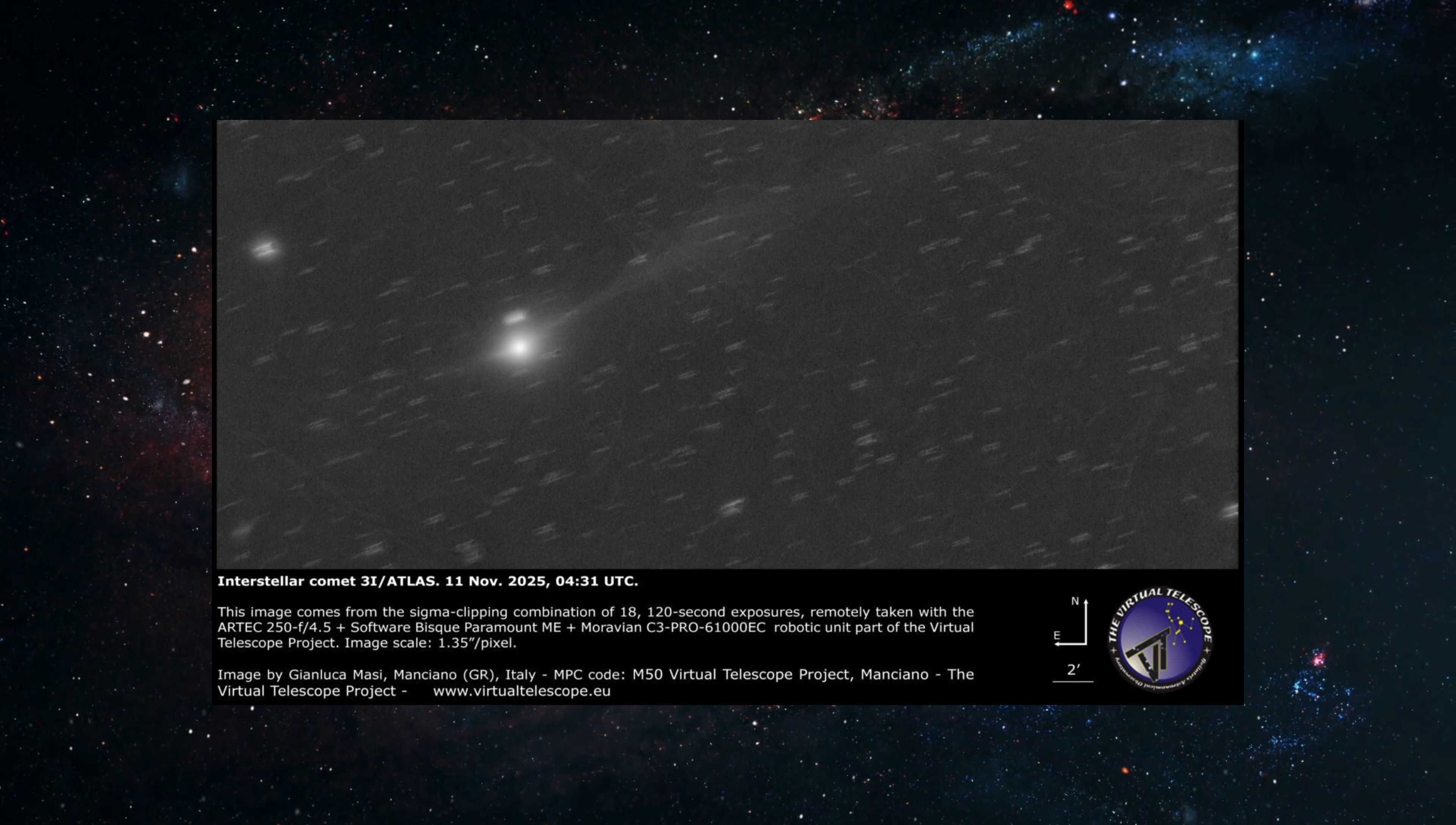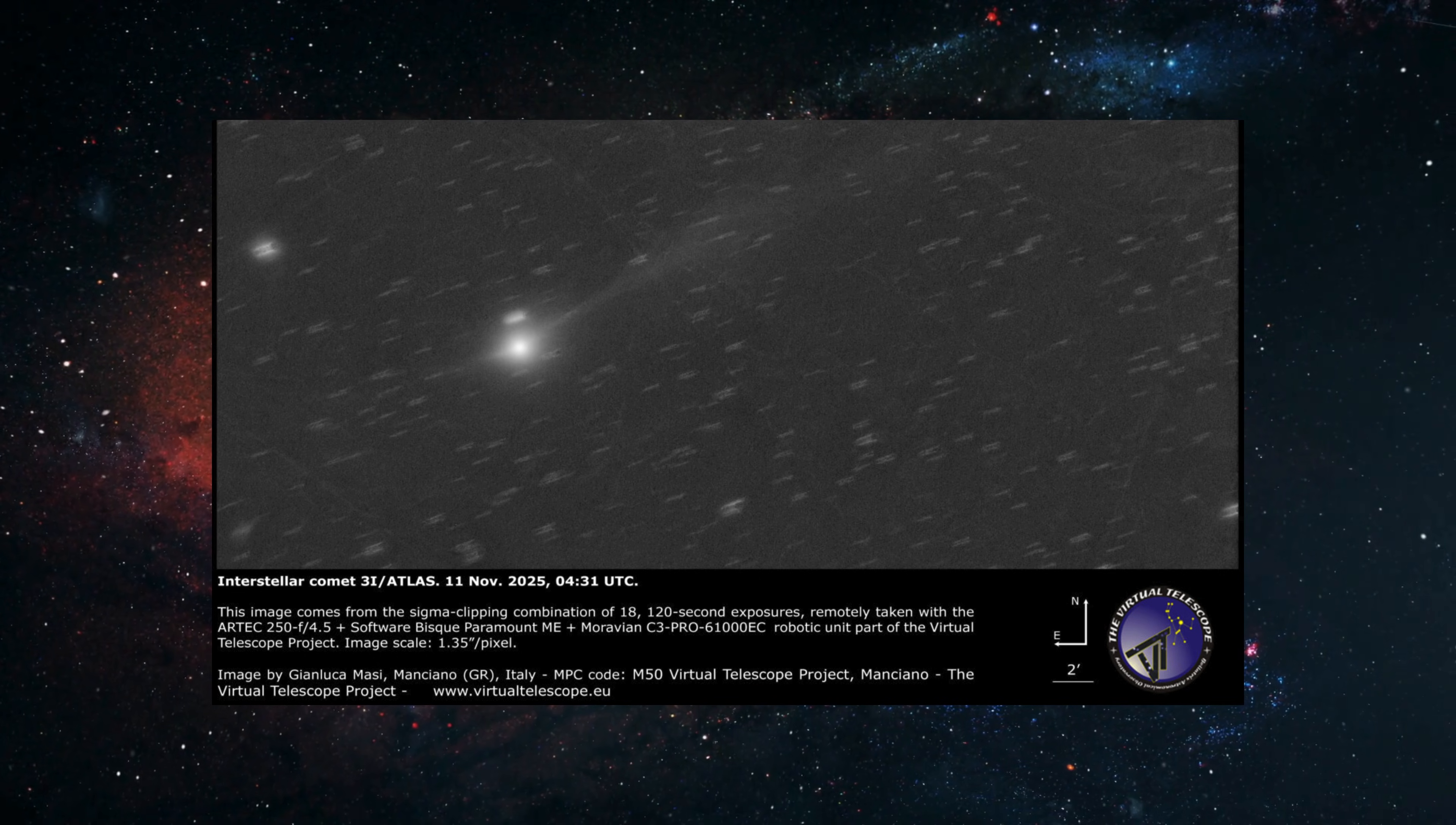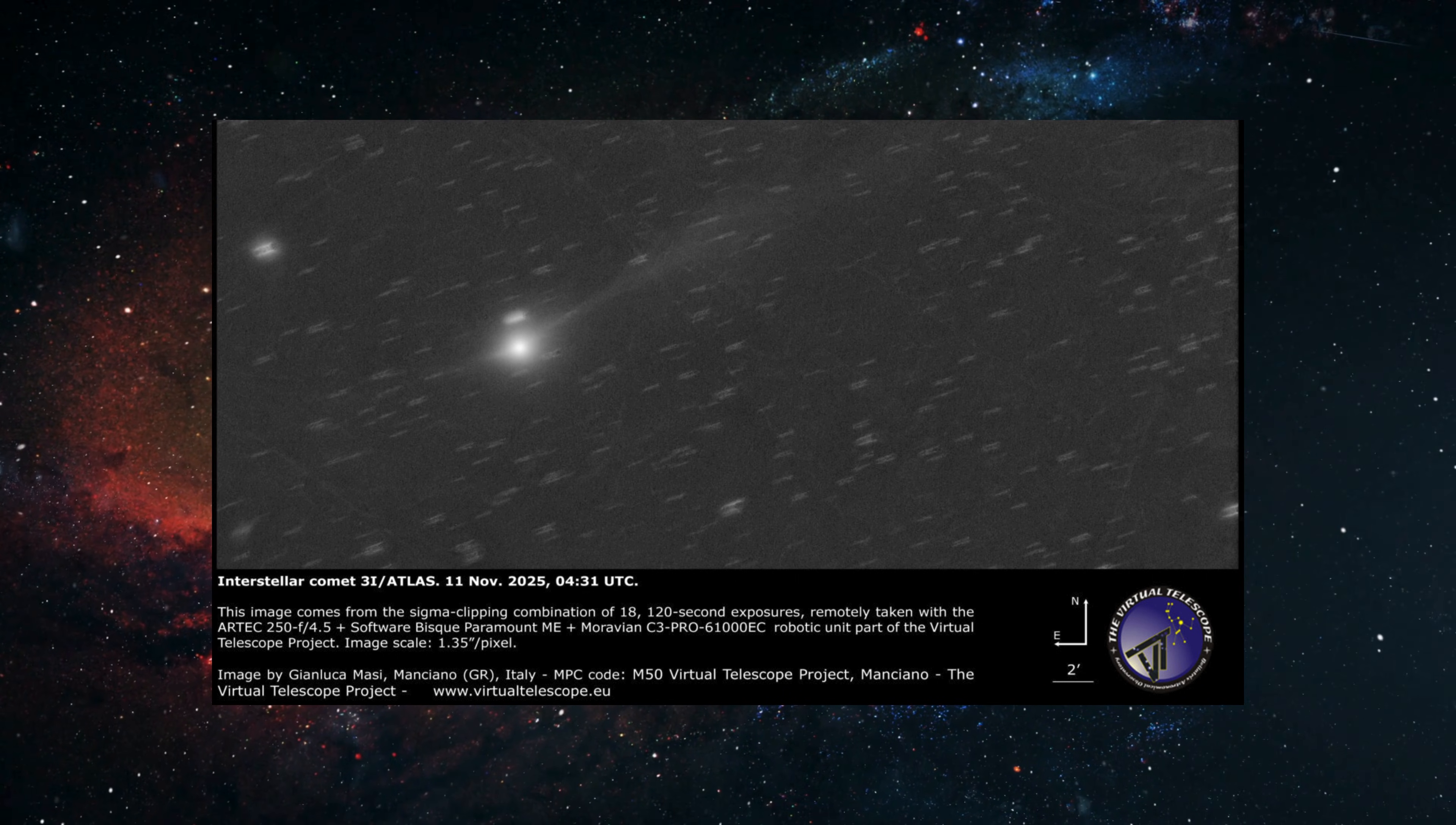For 3i/ATLAS, this acceleration was measured at approximately 89.3 × 10^-9 astronomical units per day squared. That number sounds abstract, so here's what it really means. Every single day, the object speeds up by roughly 13 kilometers per day more than the day before.